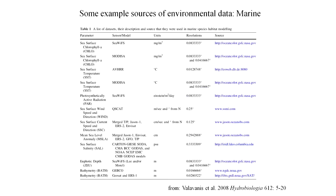Here's a very similar thing from a paper on sources of marine data sets. Similar kinds of parameters: sea surface chlorophyll, sea surface temperature, sea surface wind speed, depth, bathymetry — those kinds of things, at various resolutions from different data sources. There are data sets out there for marine systems, though not as much as in terrestrial systems. And you've got a third dimension to worry about in terms of depth.